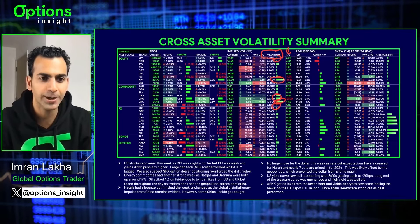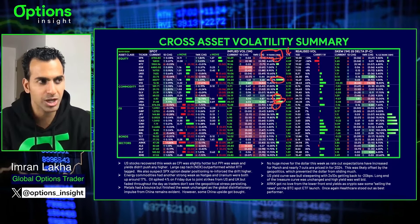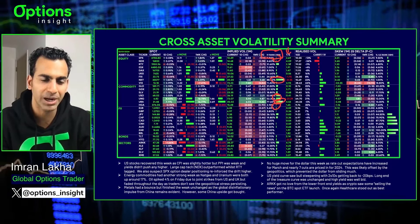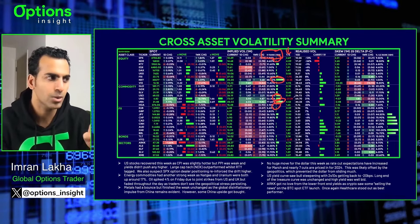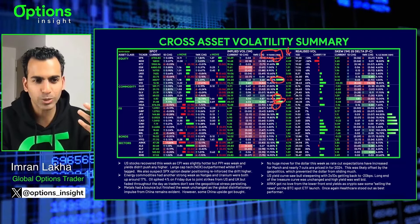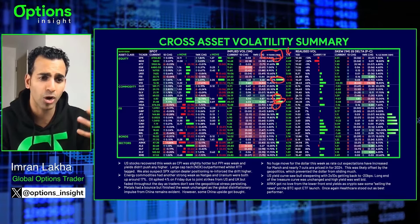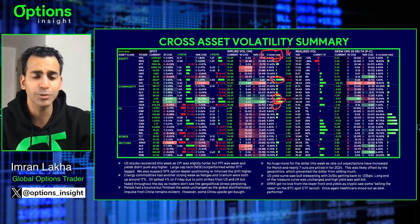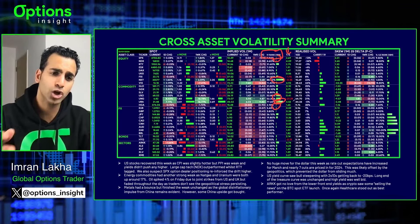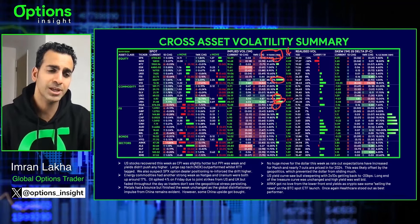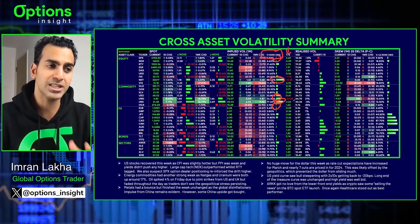We've got term structure here. The idea with term structure is to see if the curve's in contango or backwardation. If this is a positive number, we're in contango; if it's a negative number, we're in backwardation. What does backwardation tell us? It tells us the market's in a stressed out state — the market is expecting quite a lot of volatility and then in the future it's going to settle down. Whereas if it's in contango, it's saying we're not moving right now, but we're going to charge you a term premium for the future because there might be some movement we don't know what's going to spark. So those are the different states of the curve.